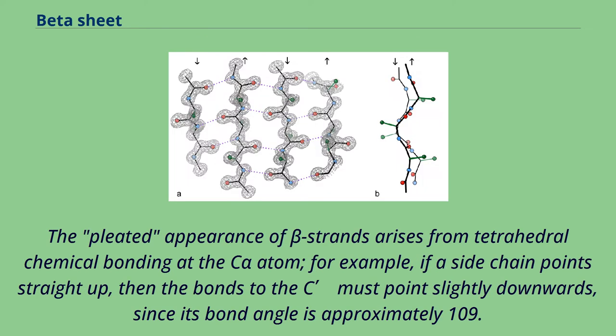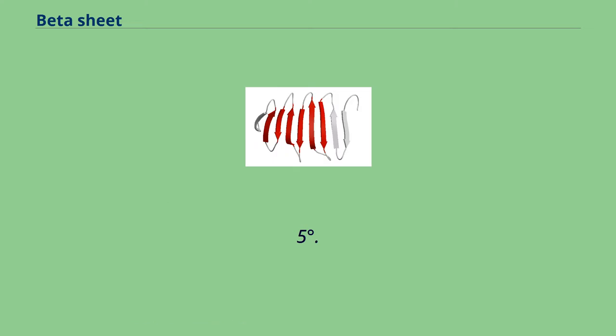The pleated appearance of beta strands arises from tetrahedral chemical bonding at the C-alpha atom. For example, if a side chain points straight up, then the bonds to the C must point slightly downwards, since its bond angle is approximately 109.5 degrees.